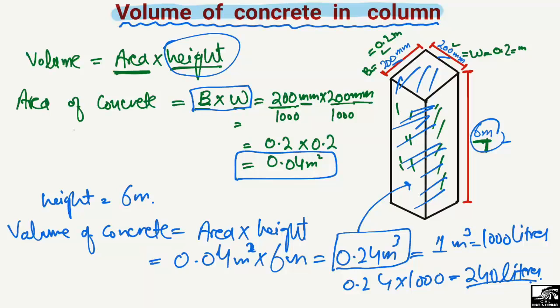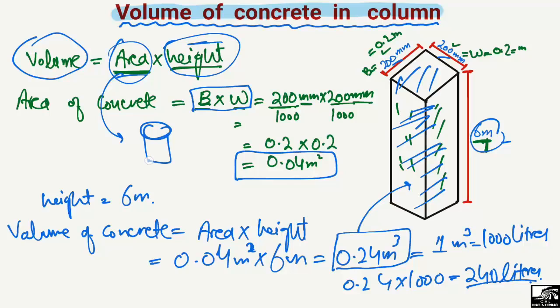You can also find out the volume of concrete for any type of column just by knowing the formula: Volume equals area multiplied by height. The area depends on the shape — for circular columns use the circle formula, for trapezoidal shapes use the trapezoidal formula, and so on. This is the basic formula to find the quantity of concrete in a column. Hope you guys understand, and don't forget to subscribe for daily engineering videos. Thank you for watching.